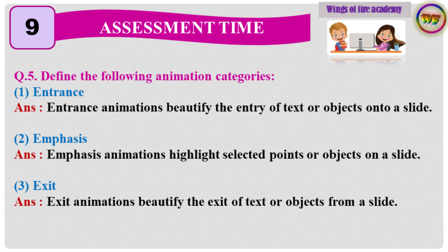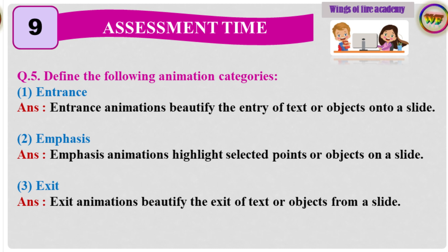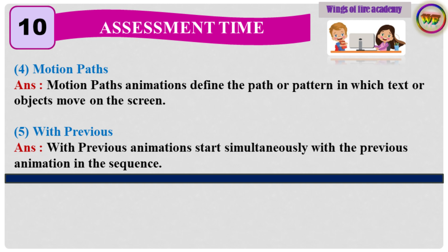Question 5: Define the following animation categories. 1. Entrance. Answer: Entrance animations beautify the entry of text or objects onto a slide. 2. Emphasis. Answer: Emphasis animations highlight selected points or objects on a slide. 3. Exit. Answer: Exit animations beautify the exit of text or objects from a slide. 4. Motion Paths. Answer: Motion Paths animations define the path or pattern in which text or objects move on the screen. 5. With Previous. Answer: With Previous animation starts simultaneously with the previous animation in the sequence.